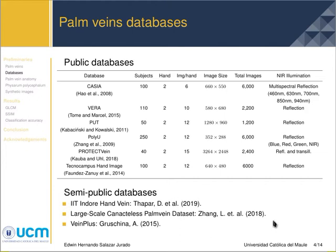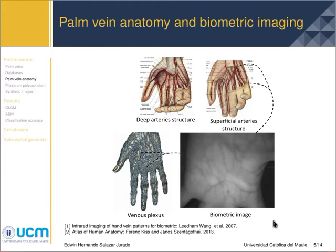In other biometric domains such as fingerprints, synthesized databases enable the respective biometric processing technologies to advance rapidly. For the synthesis of palm veins, it is first necessary to determine which veins are observed in biometric images. Taking into account the anatomy, palm veins are divided into two sets: deep and superficial. Of these, only the superficial ones are perceived due to the optical limitation of the acquisition device.